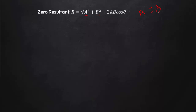The second condition is that both vectors must be in exactly opposite directions — that is, if A-bar is pointing one way, B-bar must point the opposite way, making the angle between them 180 degrees. Since cos 180 equals minus 1, the formula gives: a-squared plus a-squared plus 2 times a times a times (minus 1) = 2a-squared minus 2a-squared = 0. So two equal vectors in exactly opposite directions give a zero resultant.